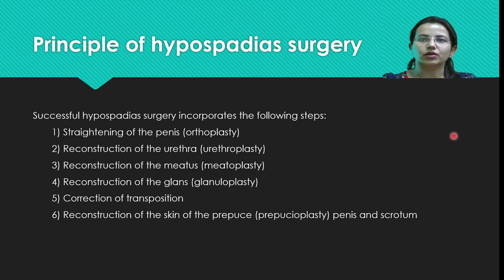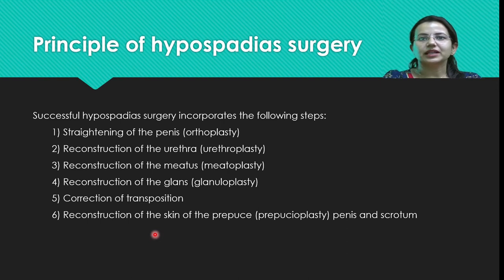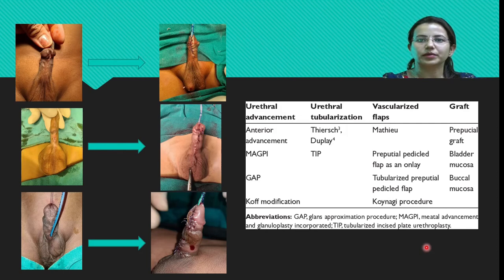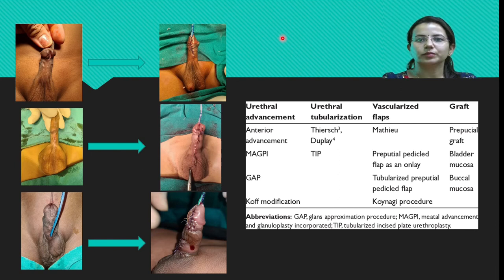The basic principles of hypospadias surgery involve: orthoplasty (straightening of the penis), urethroplasty (reconstruction of the urethra), meatoplasty (reconstruction of the meatus to adequate caliber), glanuloplasty (reconstruction of the glans), correction of transposition, and reconstruction of prepuce, penile, or scrotal skin as needed. Urethral advancement procedures such as MAGPI are commonly done, and urethral tubularization using penile skin itself includes the Thiersch-Duplay or TIPS procedure.